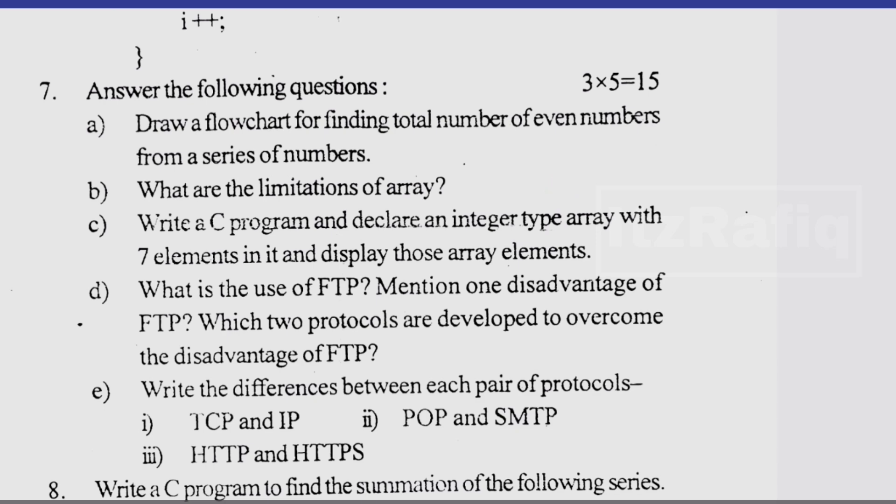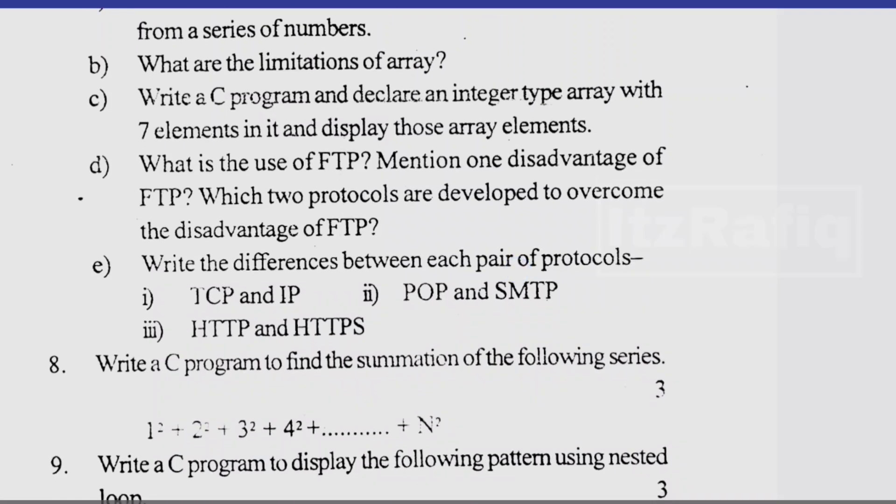Then for three marks question, define, draw flowchart for total number of even numbers from a series of numbers. It's already in book. Limitation of array, and number c I already yesterday asked you to see this question. Then what is the use of FTP? Mention different disadvantage of FTP, this one. Then difference between TCP and IP, POP and SMTP, and HTTP and HTTPS.